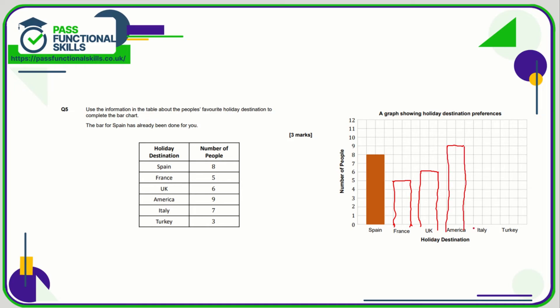Using a ruler would be preferable. Italy is going to go all the way up to 7, which is this point here. And Turkey just goes up to 3, and we're done.